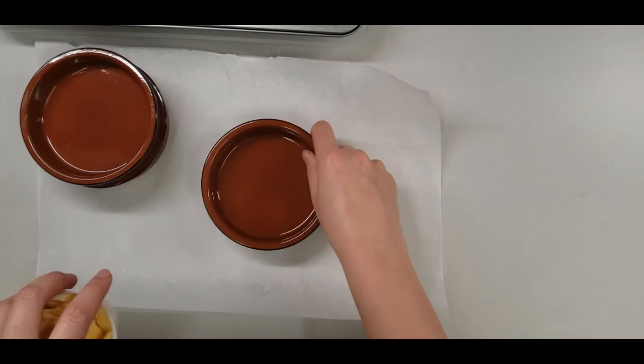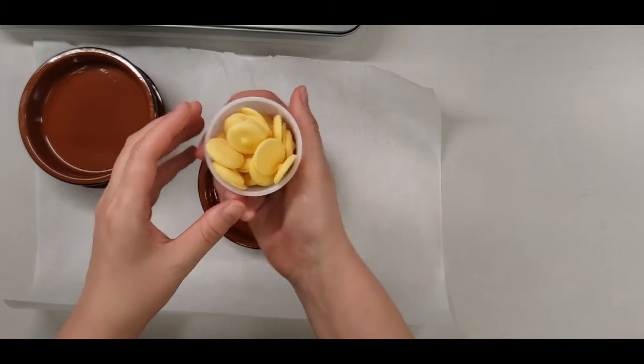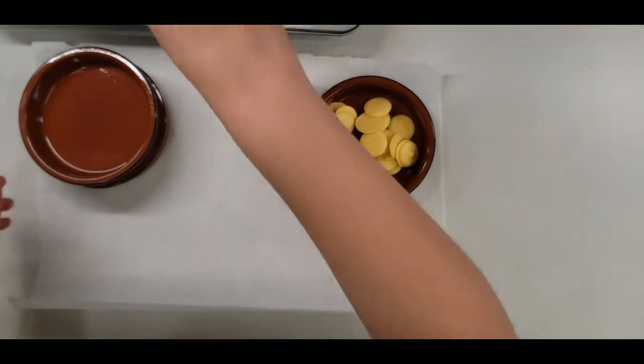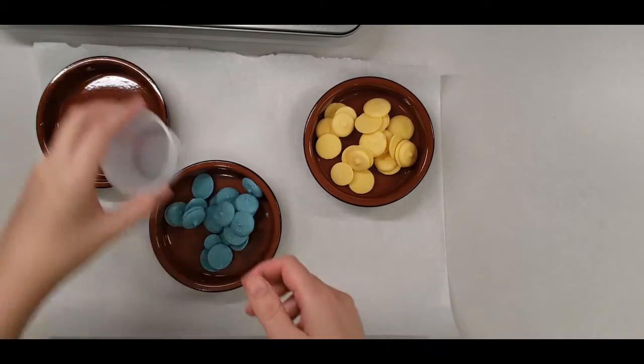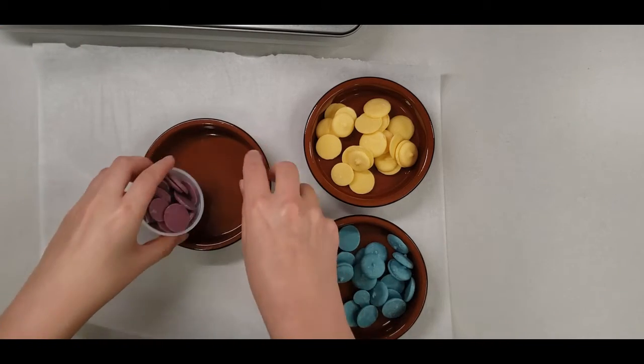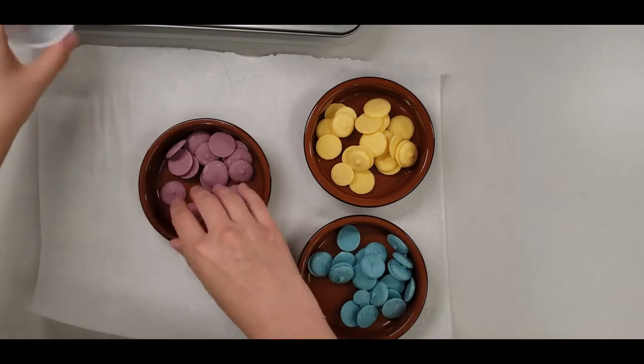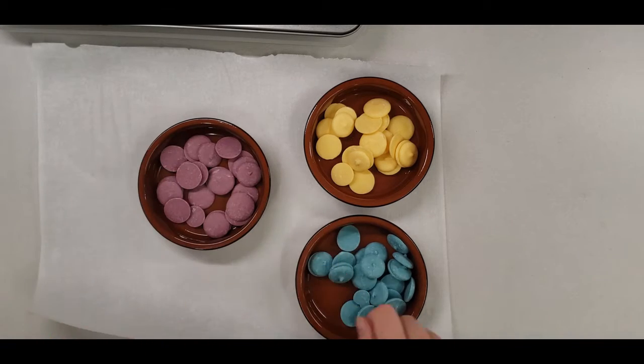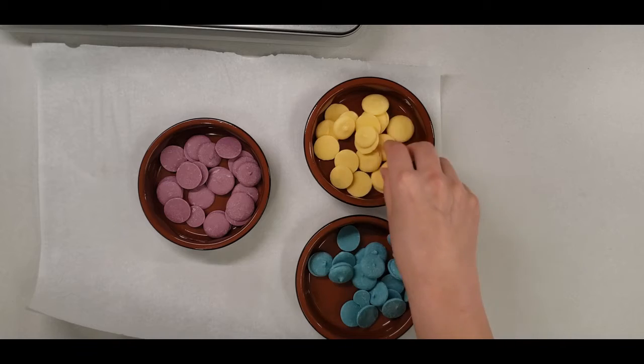Let's get started. We're going to be microwaving our candy melts in our microwavable dishes. You have about 2 ounces of each color. And it is advised to microwave these in short bursts of around 30 seconds each.